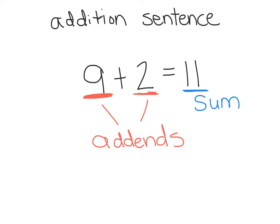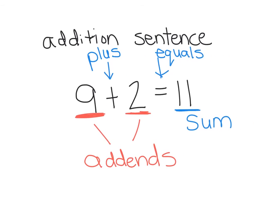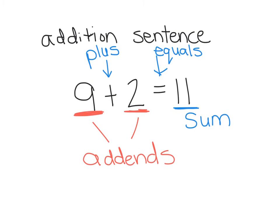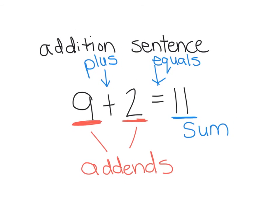And the symbols being used are the plus sign and the equals sign. So those are the parts that make up an addition sentence: the two addends,